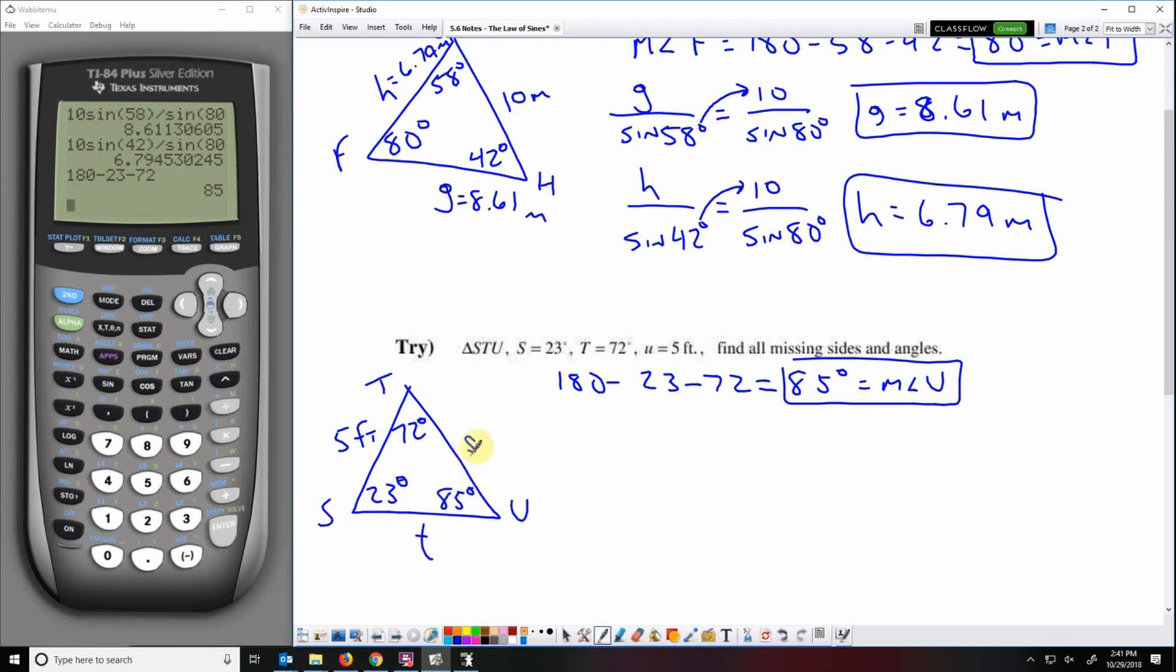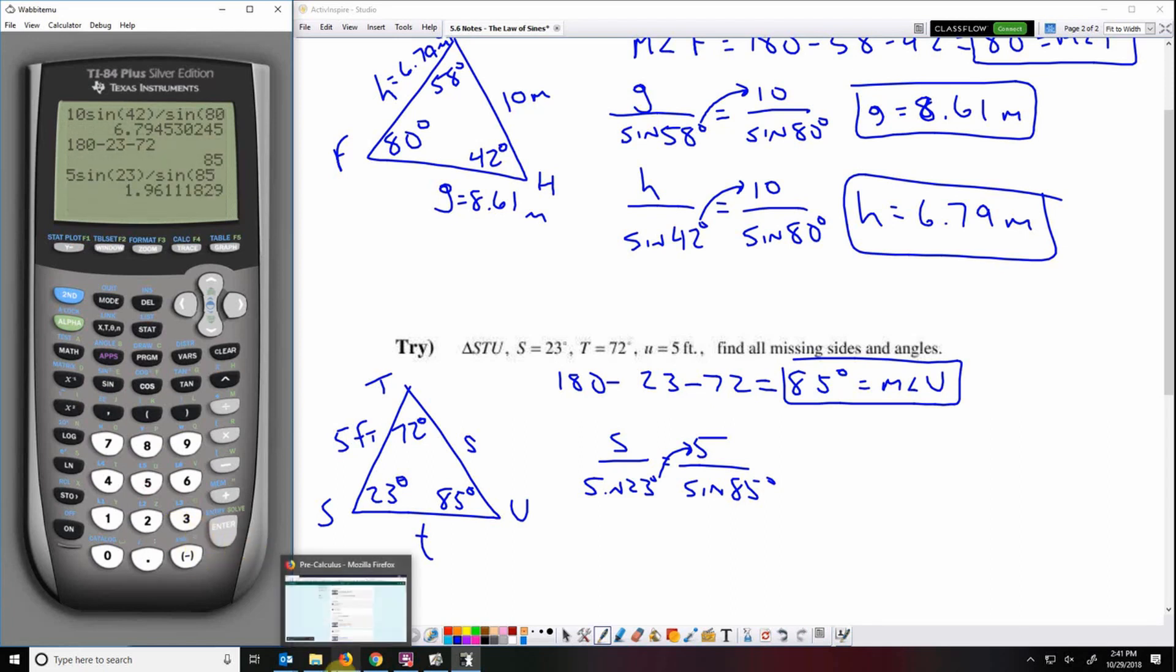Then I want S and T, so S over sine 23 equals 5 over sine 85. So I'm going to multiply that sine 23 across, so 5 times sine 23 divided by sine 85. 1.96. And that is in feet.